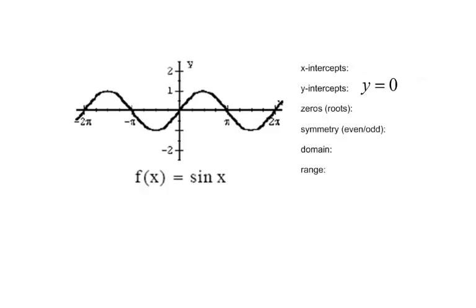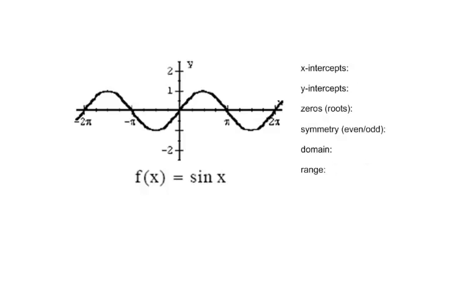For this parent sine function, there is only one y-intercept: the point of origin. The domain is negative to positive infinity. Looking at the graph, the range of this function is negative 1 to positive 1 — a closed interval that plays a very big role when dealing with this function.